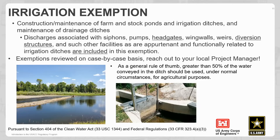What constitutes an irrigation ditch versus a municipal or industrial water supply? As a general rule of thumb, greater than 50% of the water conveyed in the ditch should be used for agricultural purposes. If it's a split-party ditch where half the water is for municipal and industrial use and half is for agriculture, and it's the municipal and industrial component wanting to do the work, they're not going to qualify for the exemption and will need a permit. The purpose for the work must be solely related to agricultural purposes, with at least 50% use heading towards agriculture.